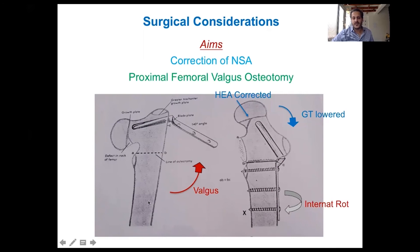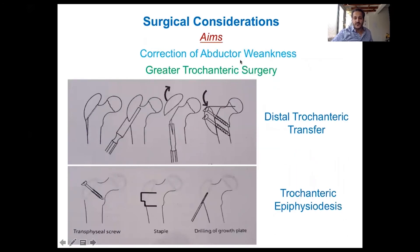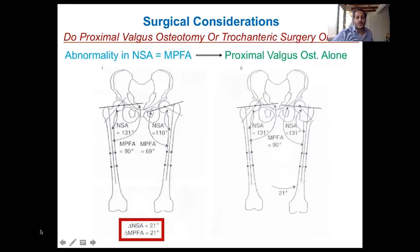The surgery to correct the neck shaft angle is the proximal femoral valgus osteotomy. The valgus osteotomy corrects the orientation of the epiphyseal line, brings down the greater trochanter, and lengthens and strengthens the abductors. Internal rotation can be incorporated to correct retroversion. To address abductor weakness further, we can transfer the greater trochanter distally or perform epiphysiodesis of the greater trochanter. When the difference from normal in the neck shaft angle and the medial proximal femoral angle are equal, valgus osteotomy alone is sufficient — correcting the neck shaft angle will also correct the medial proximal femoral angle and the greater trochanter will drop to its normal position.